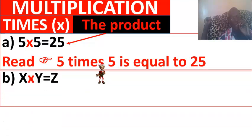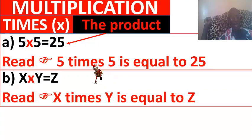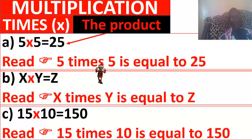B: X times Y is equal to Z. C: 15 times 10 equals 150. This is multiplication.